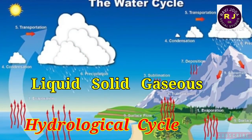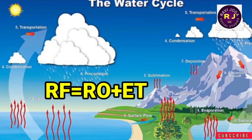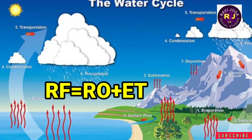Water exists in liquid, solid and gaseous states. Thus, water is a cyclical renewable resource — it can be used and reused. This cycle is expressed as RF = RO + ET, where RF means rainfall including all types of precipitation, RO is runoff water, and ET is evapotranspiration.